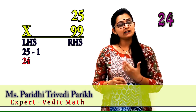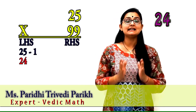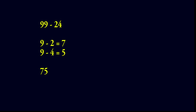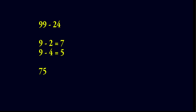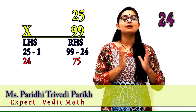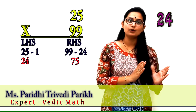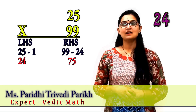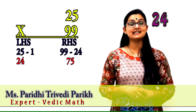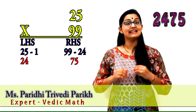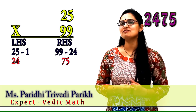For RHS, we calculate 99 minus 24 — where 24 is the LHS answer. That gives us 99 minus 24, which is 75. So the entire answer is 2, 4, 7, 5. Interesting — extremely easy and extremely fast.